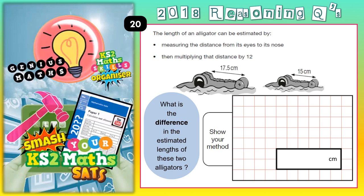It says the length of an alligator can be estimated by measuring the distance from its eyes to its nose — shown by this distance here from the eyes to the nose — and then multiplying that distance by 12. So with the bigger crocodile it would be 17.5 times 12, which would give us an estimation of the length. And with the smaller crocodile that would be 15 times 12.